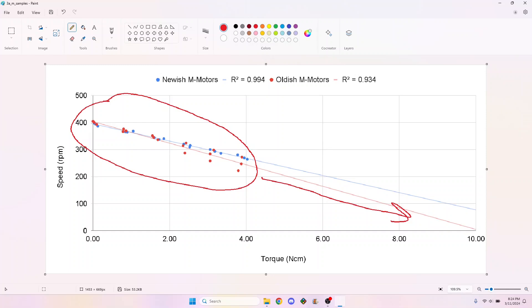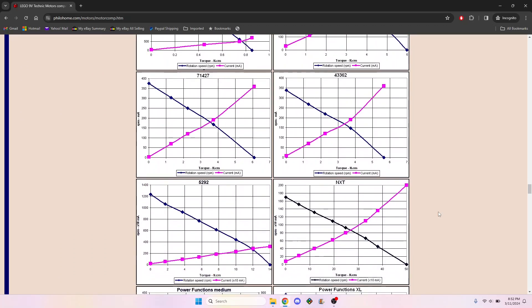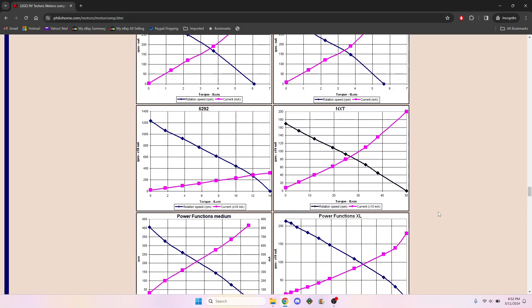While the torque curve should theoretically be a straight line, it will typically bend down in practice due to the voltage drop and current limits on various Lego power sources, including the speed controller itself.